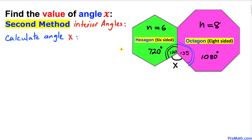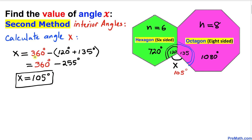Now let's calculate angle x. We know that the two interior angles at the meeting point are 120 degrees and 135 degrees, and this whole angle around the point is 360 degrees. So x equals 360 degrees minus these two interior angles, which turns out to be 105 degrees.